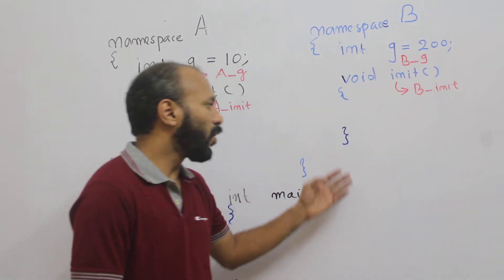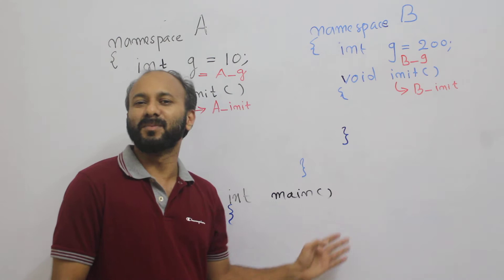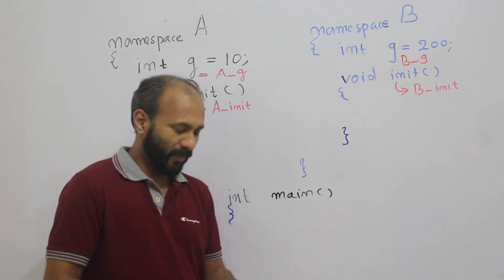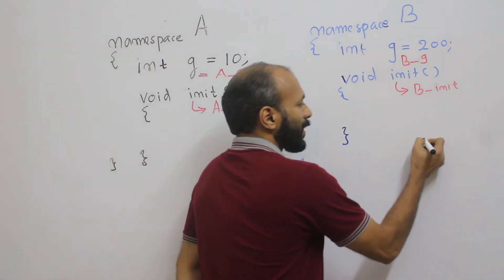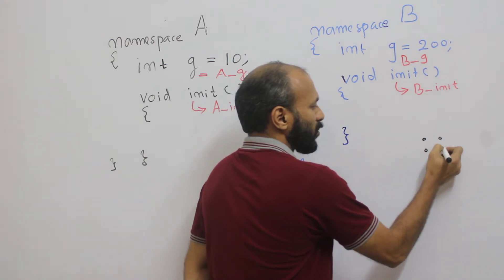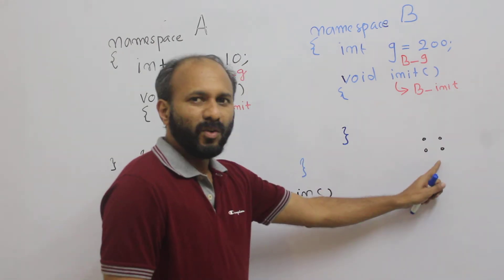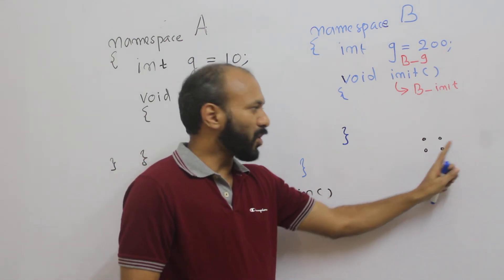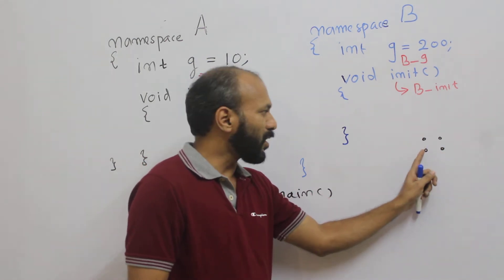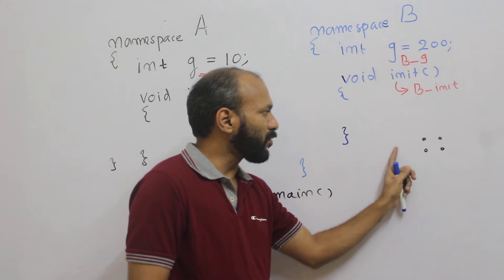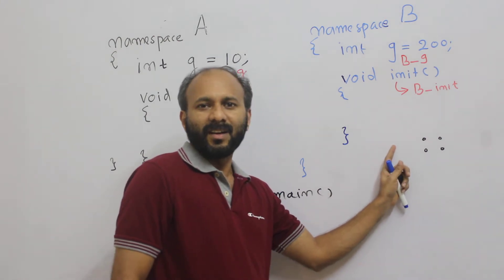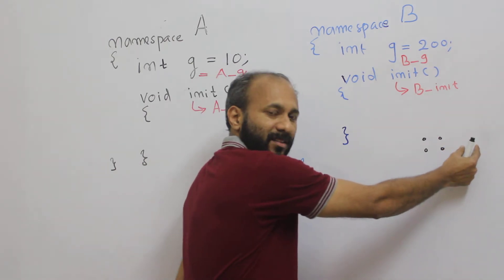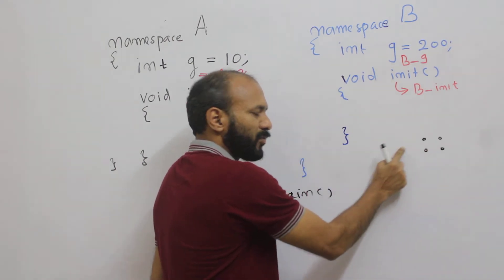Now I will show you how we can access the content of a namespace with the scope resolution operator. This operator is known as the scope resolution operator. You have to read this operator as: this thing does not belong to the current scope, it belongs to the scope of what is available on the right-hand side of this operator.